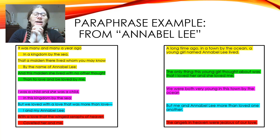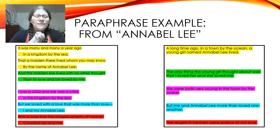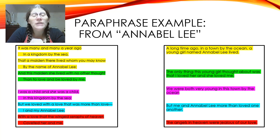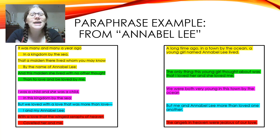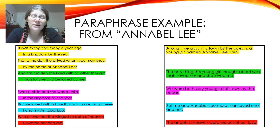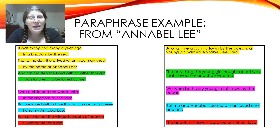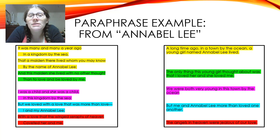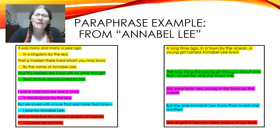The next stanza starts: 'I was a child and she was a child in this kingdom by the sea.' In my own words: 'We were both very young in this town by the ocean.' Then: 'But we loved with a love that was more than love, I and my Annabelle Lee' — paraphrased as 'me and Annabelle Lee more than loved one another.' Next: 'With a love that the winged seraphs of heaven coveted her and me.' You might need to look up a word if you don't know what it means. The winged seraphs of heaven — based on context clues you might figure it out: a seraph is another word for an angel. Coveted means jealous. So my paraphrase is: 'The angels in heaven were jealous of our love.'